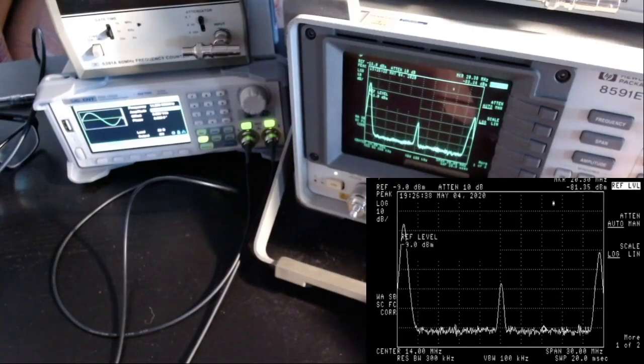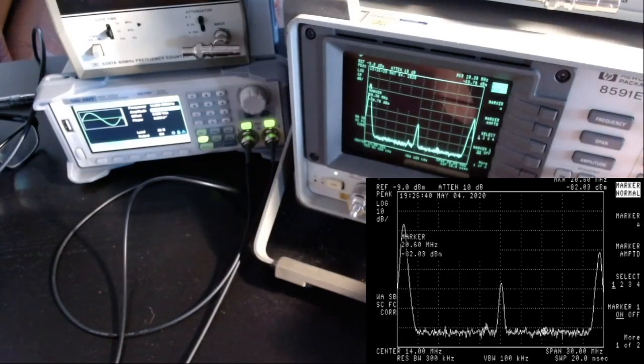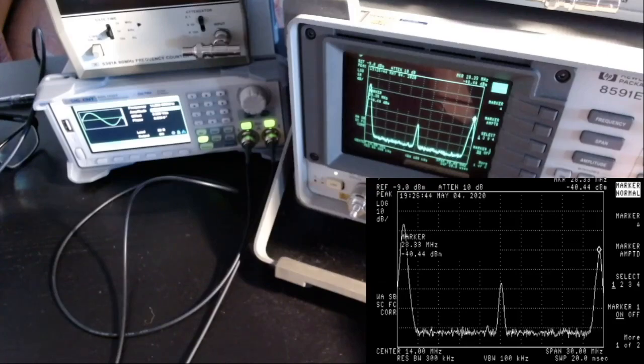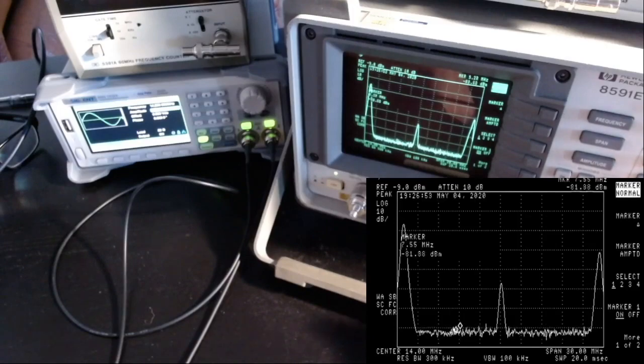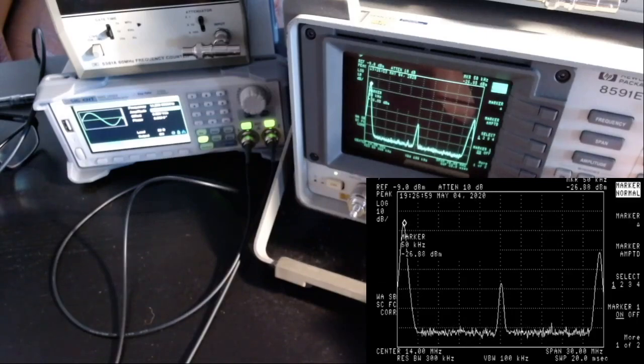Now if I expand the span to 30 megahertz, I see that I have large peaks here. This is at about 28.2, which is the sum of 14 and 14.2, and also at about 0.2. We're going to zoom there, which is 200 kilohertz, which is going to be 14.2 minus 14. These are the first products of the mixer.